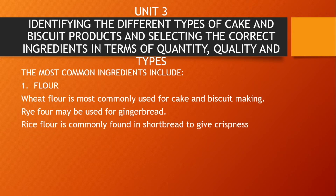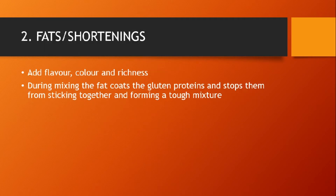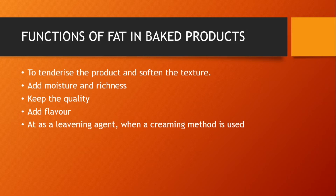The second ingredient is shortening or fats. The functions of shortening in baked products include: adding flavour, colour, and richness. During mixing, fat coats the gluten protein and stops it from sticking together and forming a tough mixture. Fats also tenderize the product, soften the texture, add moisture and richness, keep the quality of the baked product, add flavour, and act as a leavening agent during the creaming or whisking method.